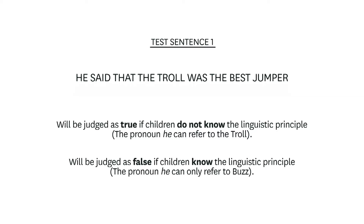Another feature of the task is worth mentioning. The story should make it clear to the child why the test sentence is false. To achieve this, at some point in the story it should look as though the test sentence is going to turn out to be true — this is the possible outcome. However, the actual outcome makes the test sentence false. In designing stories, we distinguish between the possible outcome, where it looks as though the test sentence will be true, and the actual outcome, which makes it false.